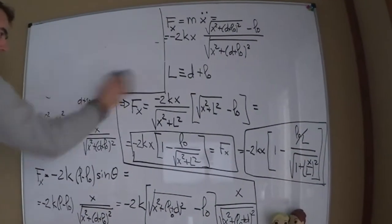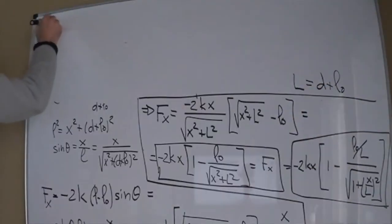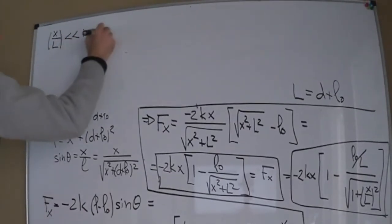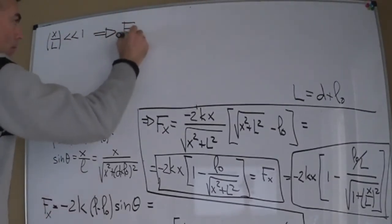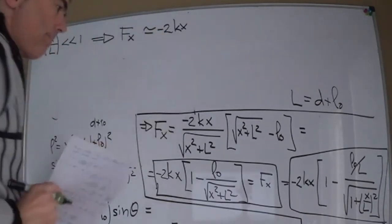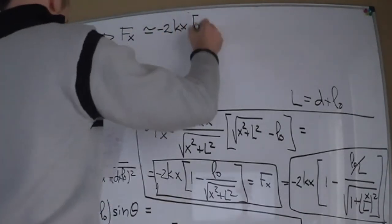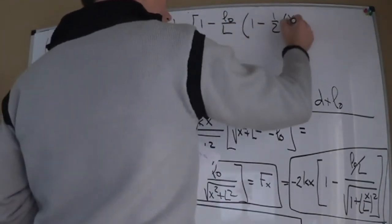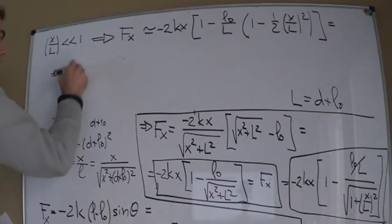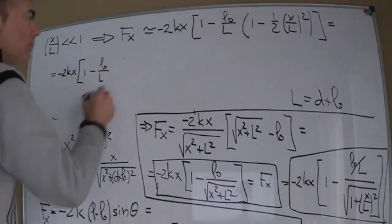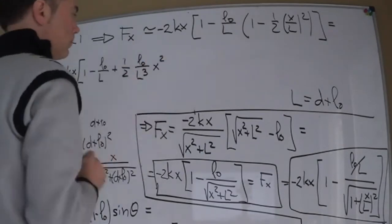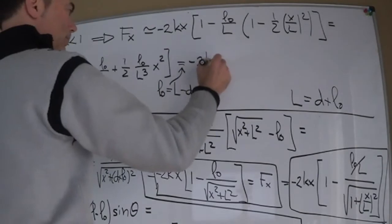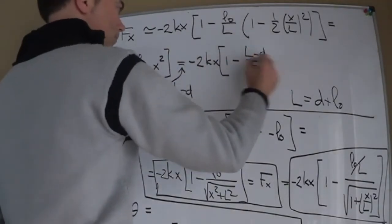Now let's consider again small displacements. This means that x over capital L is much smaller than 1, so I can expand in a Taylor series that square root in the denominator. For the second order terms, I'll use that L0 is capital L minus D and work through the algebra.